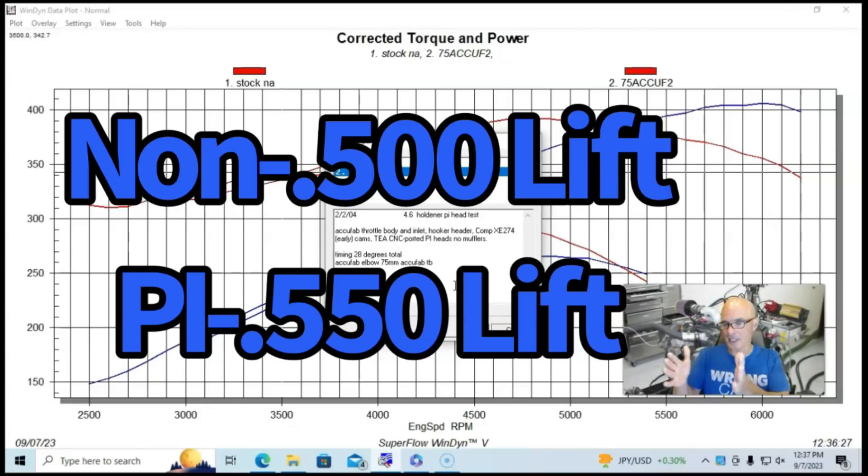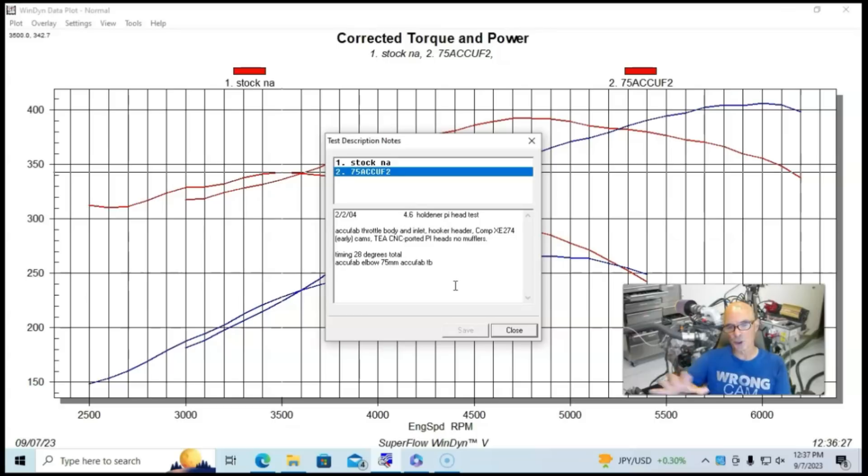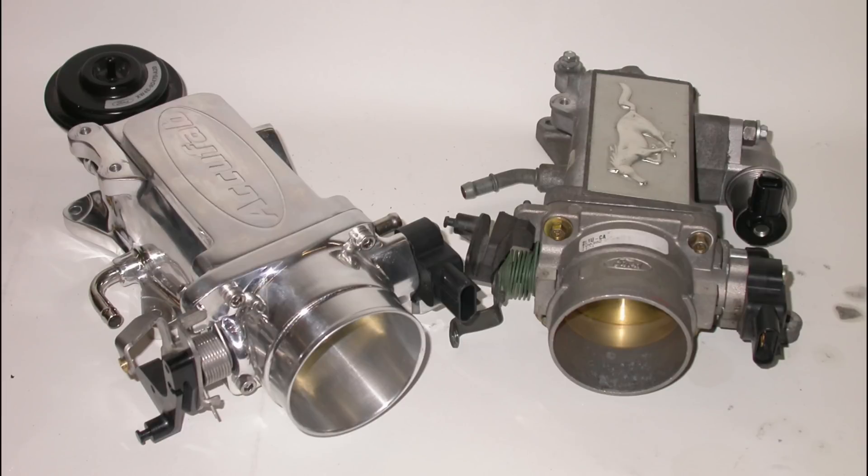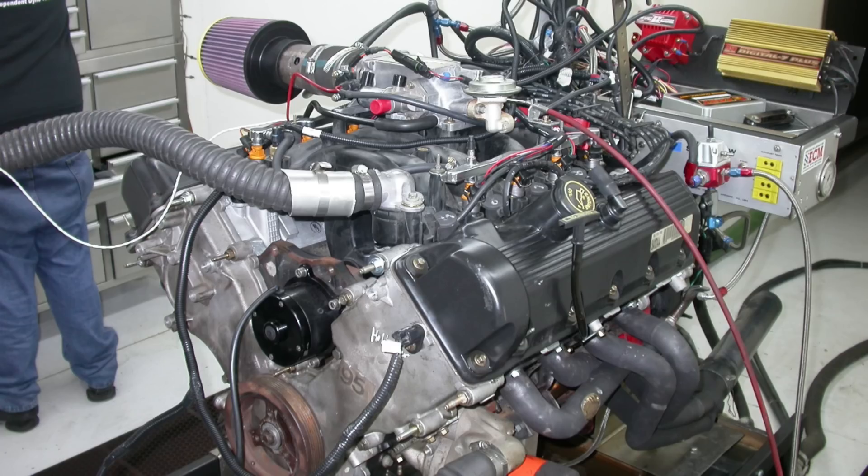500 lift on the non-PI stuff, 550 lift on the PI stuff. Comp offered three different versions of both of these PI and non-PI camshafts for the two valve stuff. So we had cams, we had the Total Engine Airflow ported PI heads, and then we had the PI intake manifold, an AccuFab 75 millimeter throttle body, and the Bullitt-looking elbow.